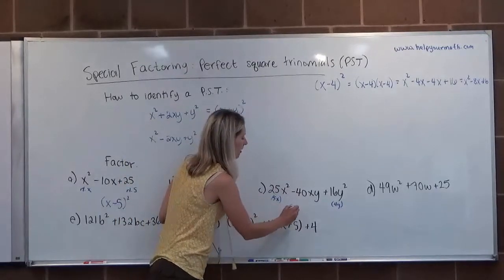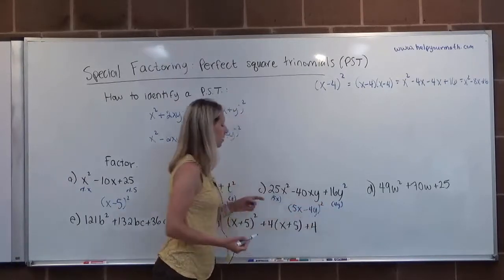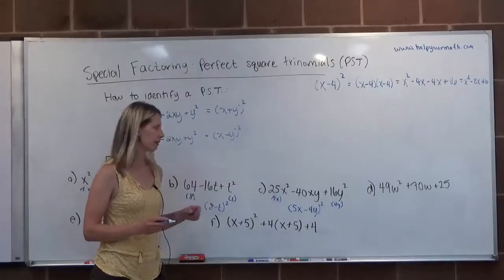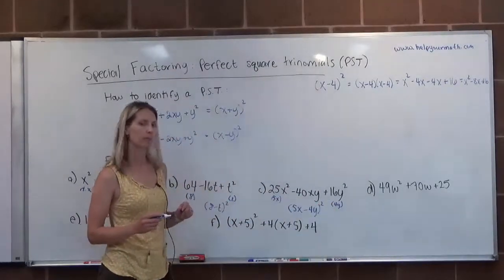And the binomial will be the root of the first minus the root of the second quantity, or sorry, the root of the third quantity squared. So the first root minus the root of the third term quantity squared.